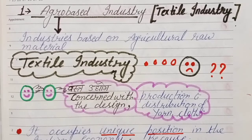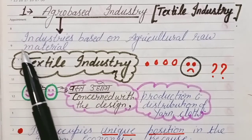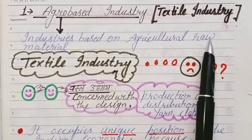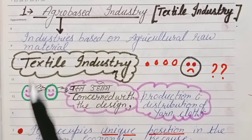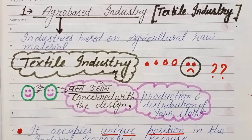In the classification of industries, we had discussed agro-based industries and explained that agro-based industries are those industries which are based on agricultural raw material. That means whatever raw material is used in these industries must be an agricultural product. The first industry in this category is textile industry.